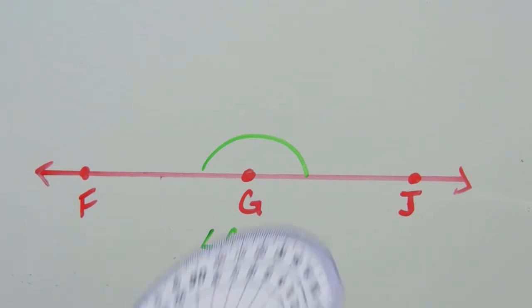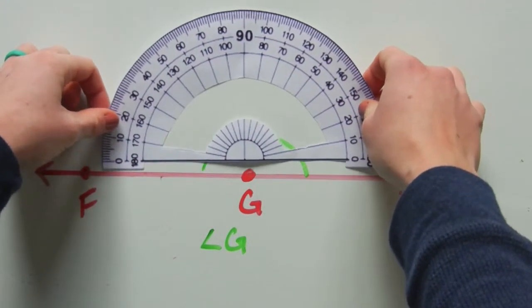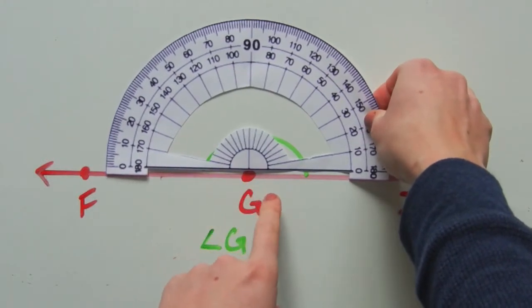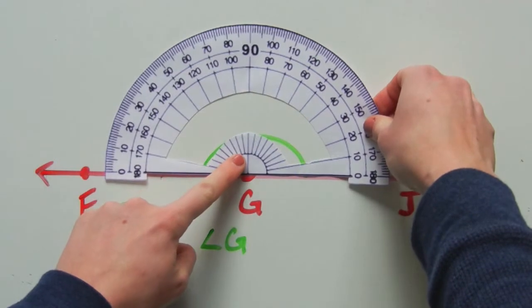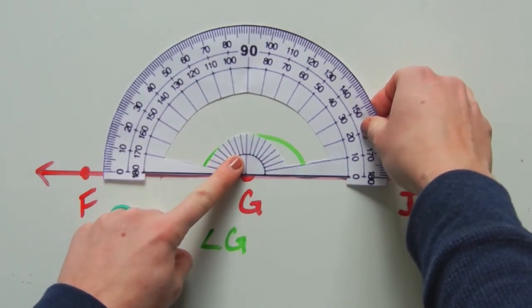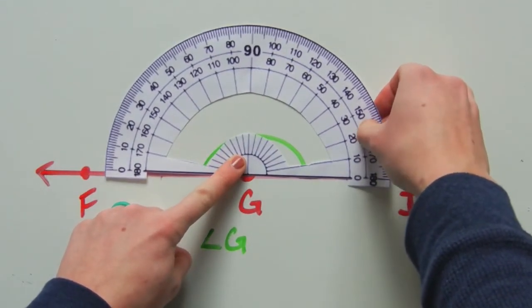So again, lining our protractor up on one ray. Let's do it on the ray G to J. The center tick mark, or the center point, falls on G, which is our vertex.